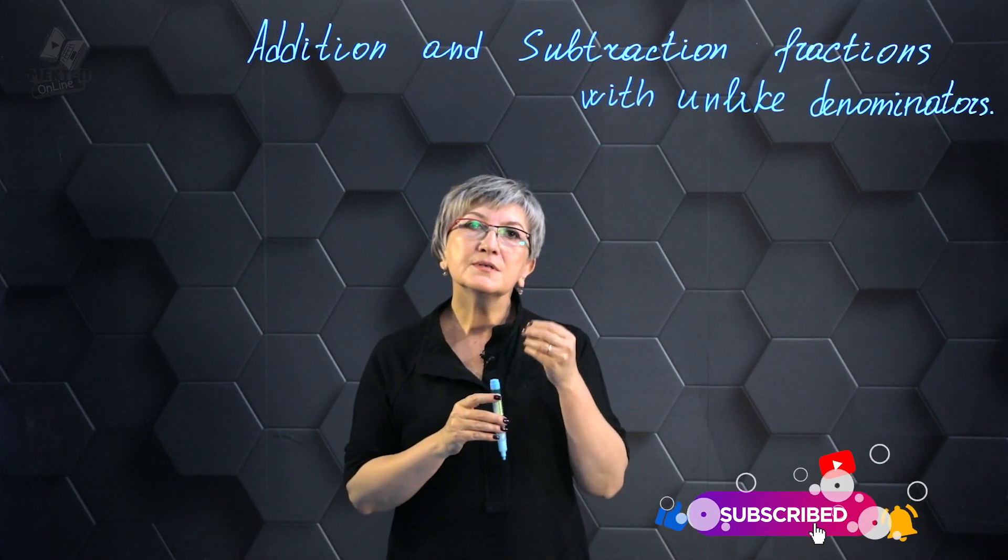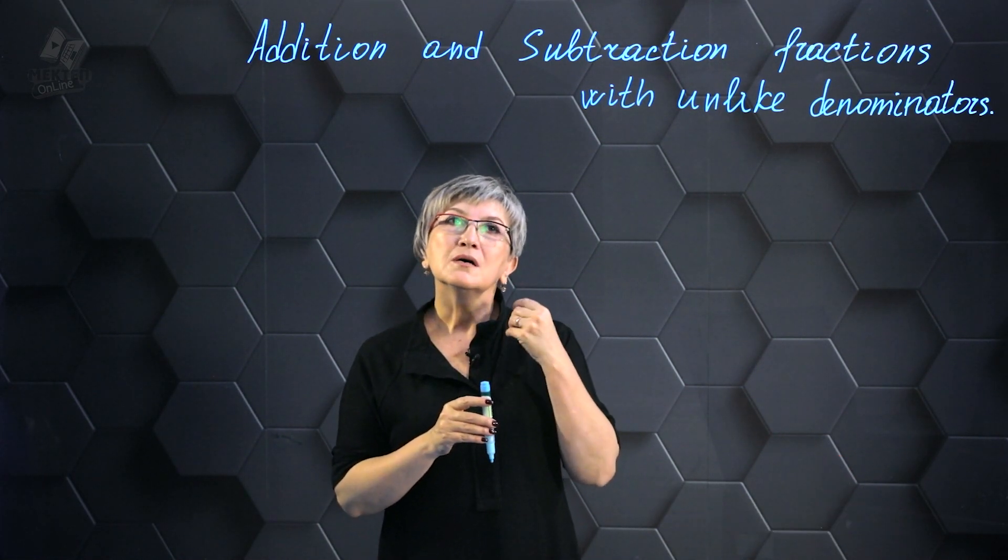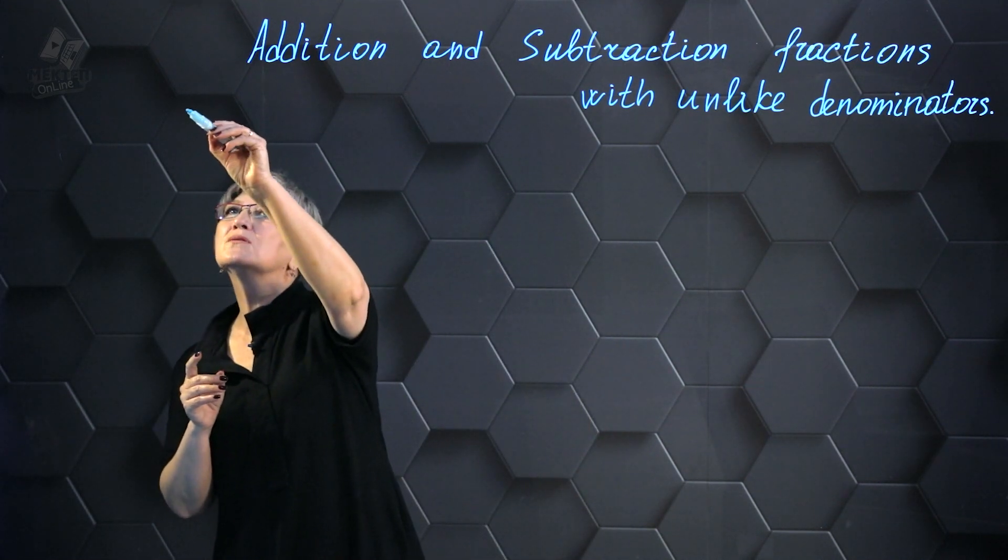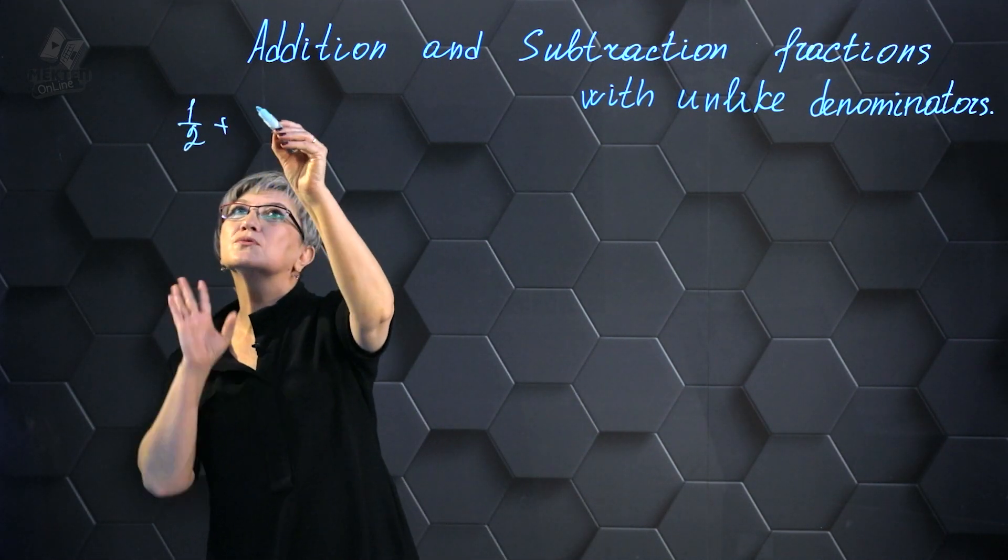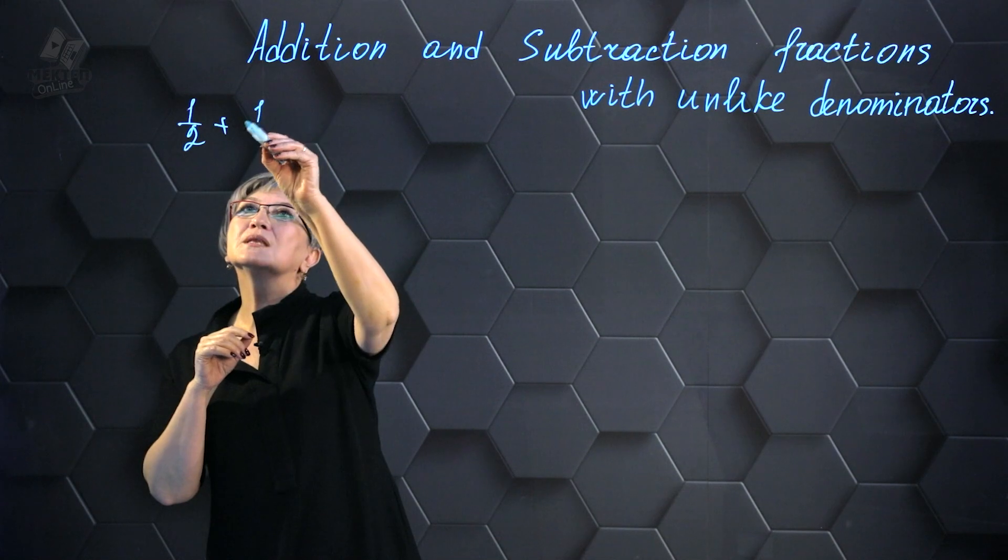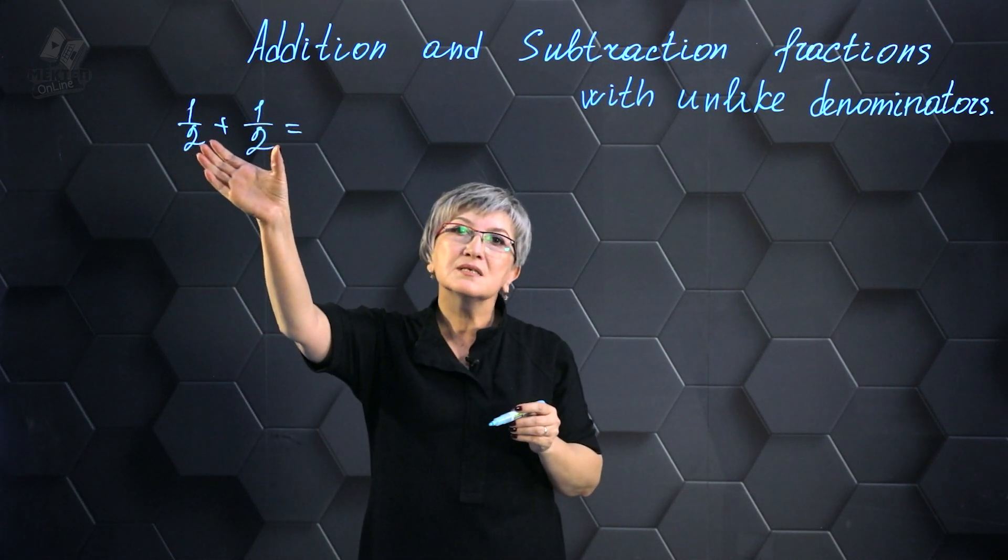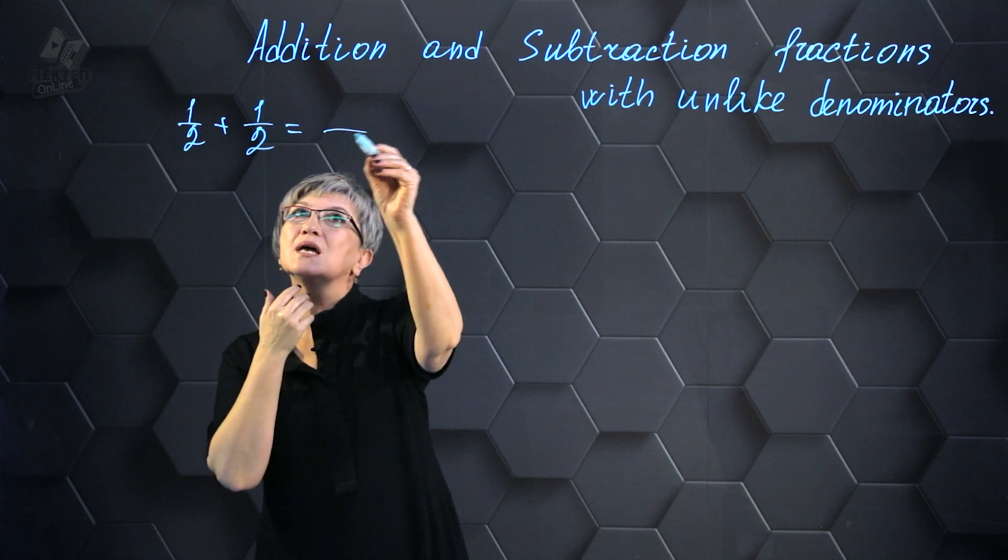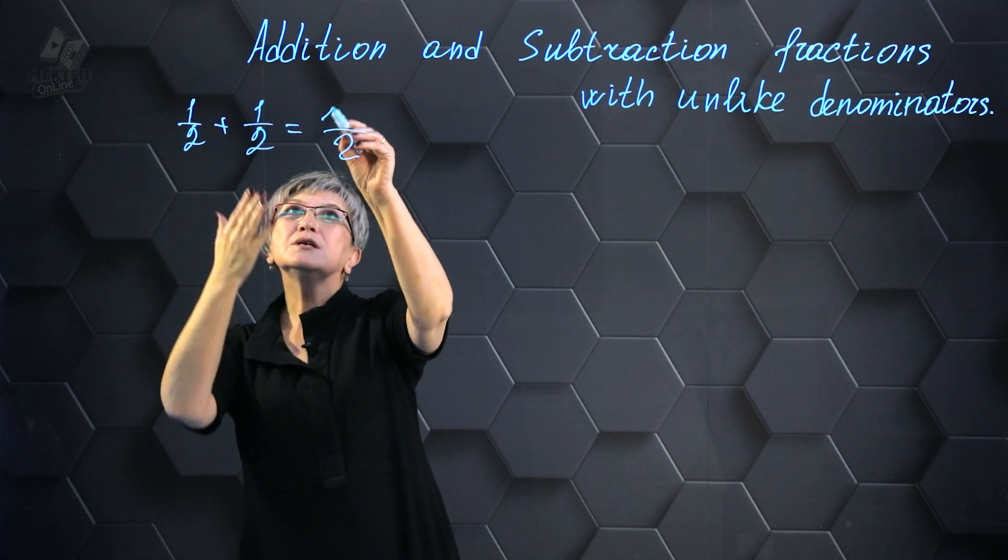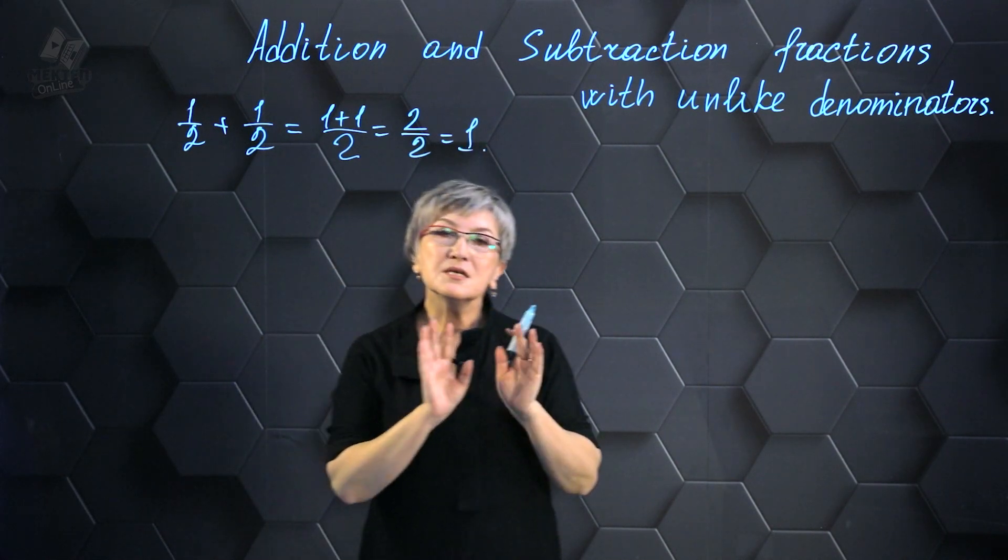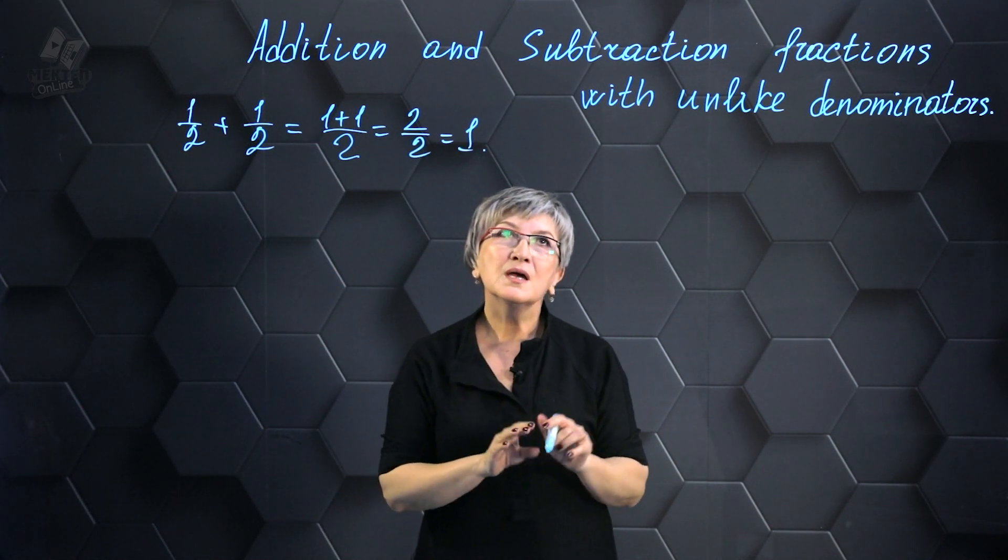Prior to this, our conversation revolved around adding or subtracting fractions. Let's write down 1/2 plus 1/2. When working with fractions that have the same denominators, we leave the denominator unchanged and simply add the numerators together. Ultimately, it becomes 2/2 or 1. Everything is going really well in this case.